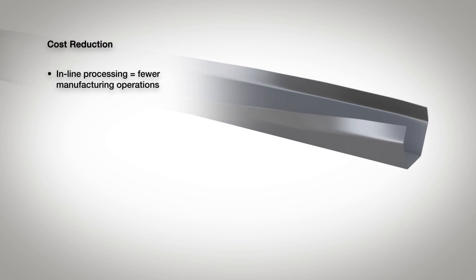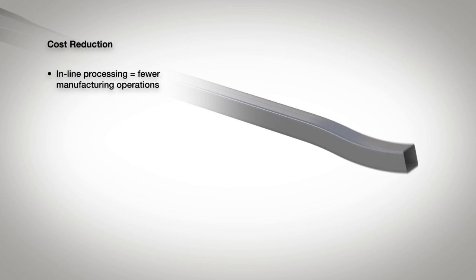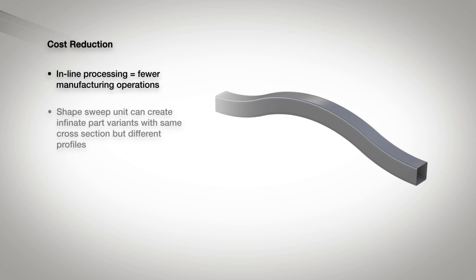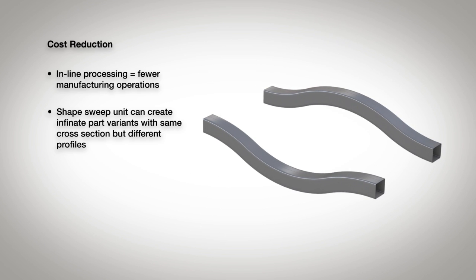With roll forming, all processes happen inline, reducing the need for manufacturing operations. One set of tooling can yield infinite variants, including both left and right hand parts.